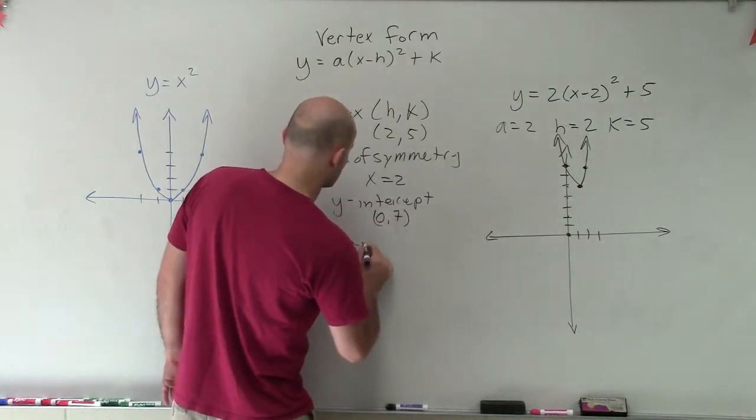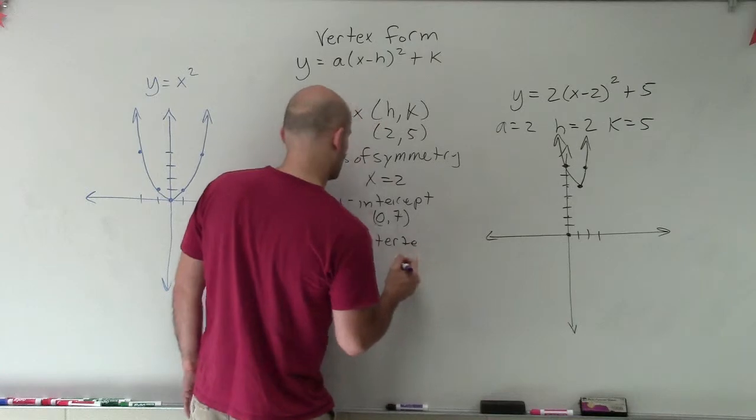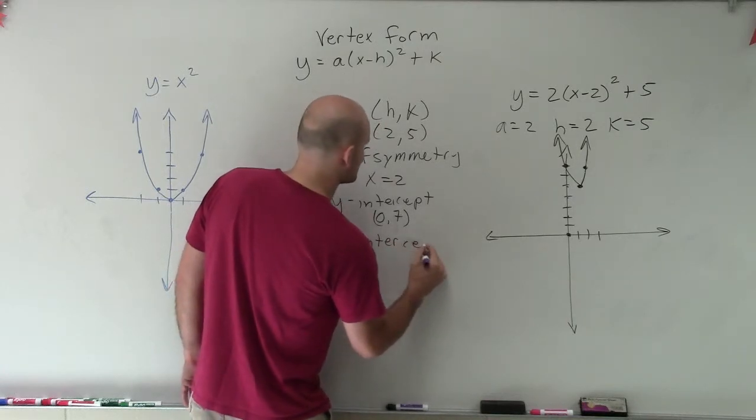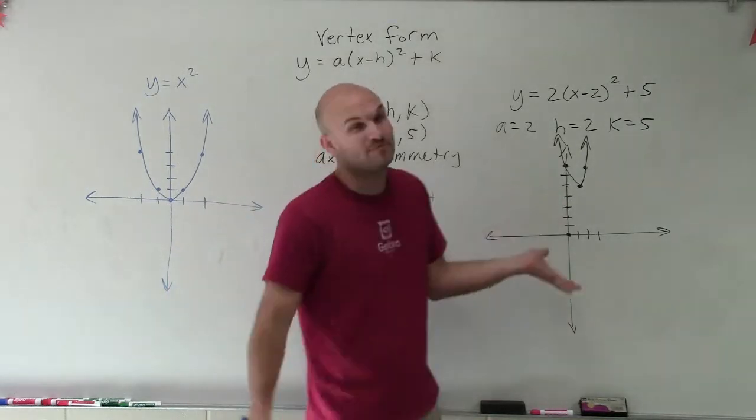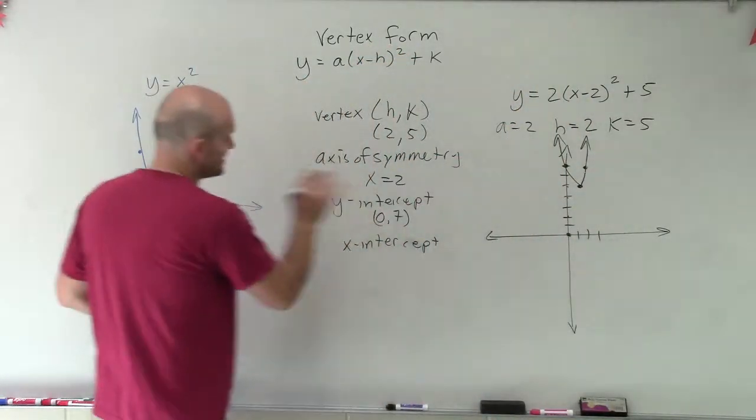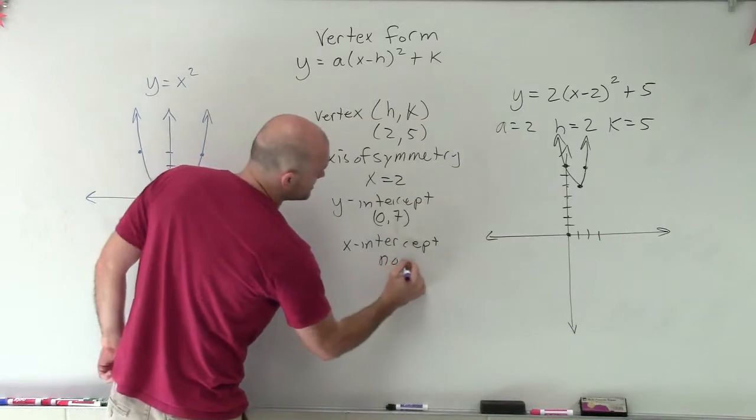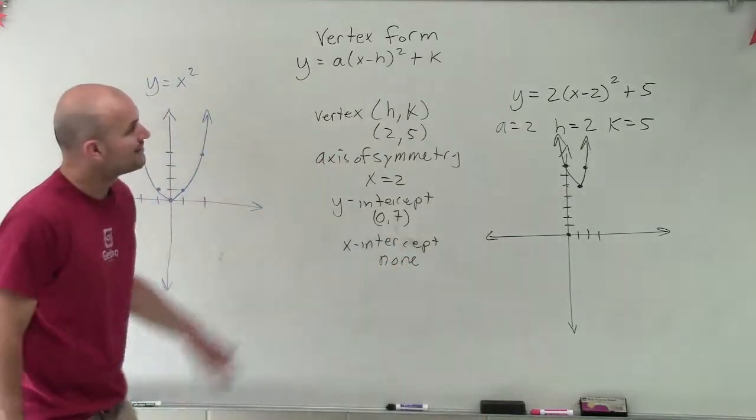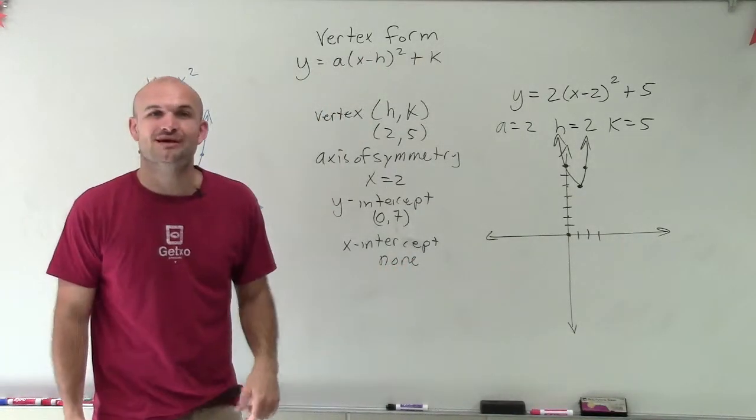And my x-intercept is where the graph crosses the x-axis. And you can see that since my graph has a vertex that's above the x-axis and my end behavior is now going all up, it's never going to cross the x-axis. So I'm just going to write none. And that's how you graph in vertex form with multiple transformations. Thanks.